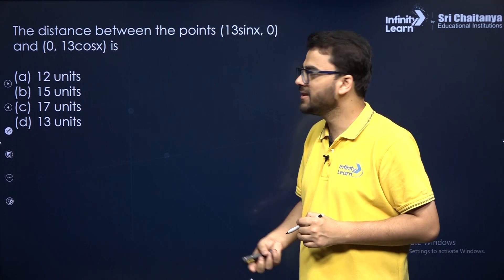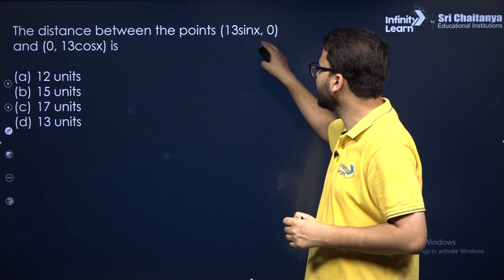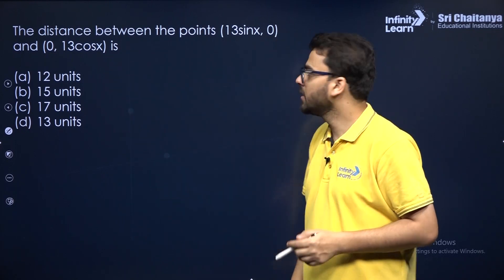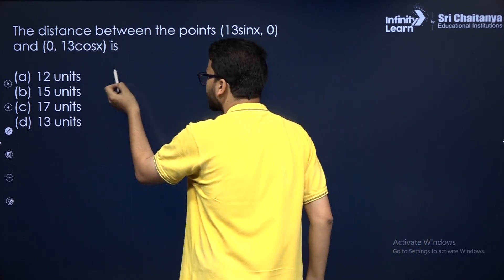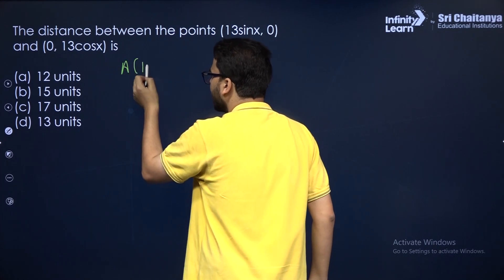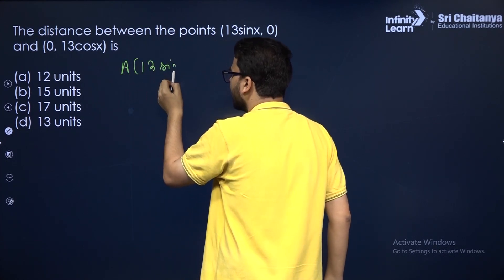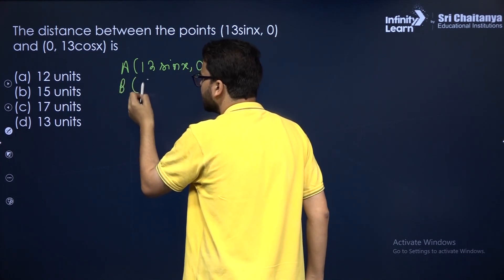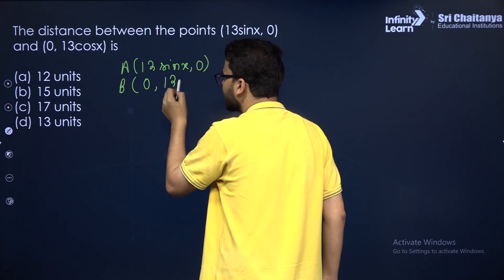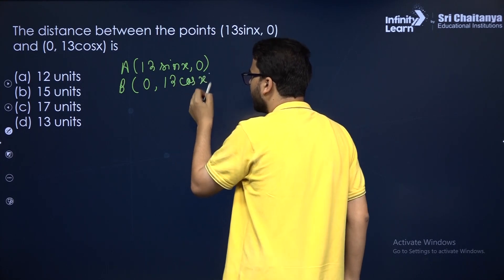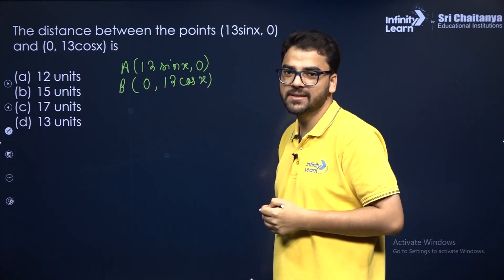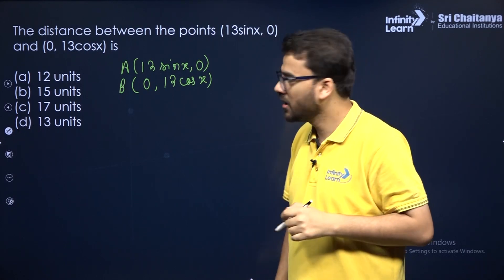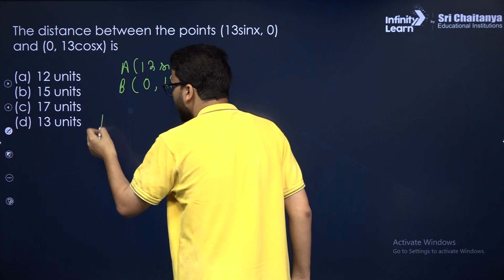Try this question: find the distance between the points A at (13 sin x, 0) and B at (0, 13 cos x). Irrespective of the value of x, the answer does not change. You can use the distance formula here.